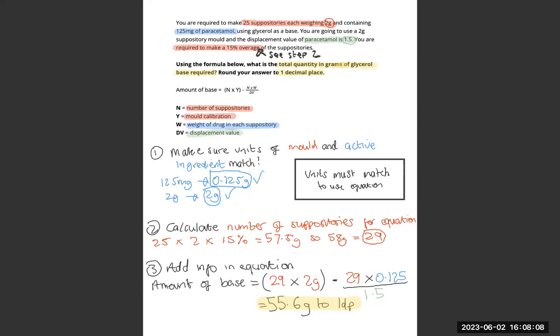So the initial amount is 25 suppositories, each of them weighs 2g. So we need 15% on top of that, so step 2 calculates that.